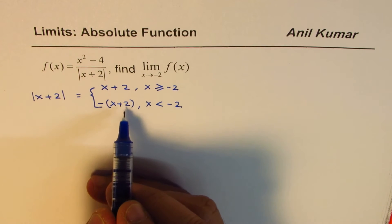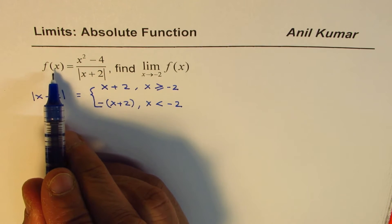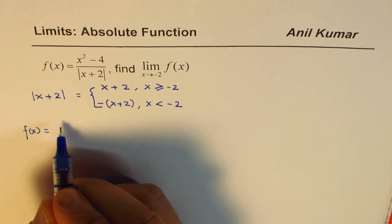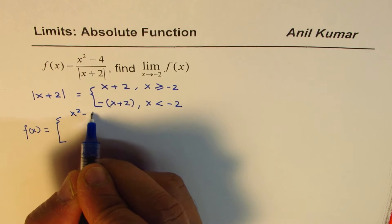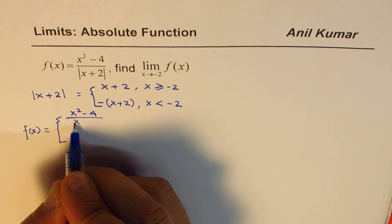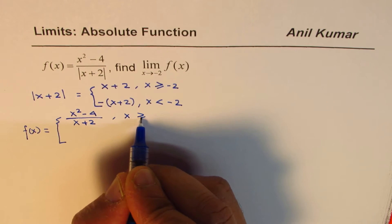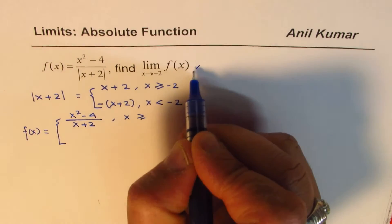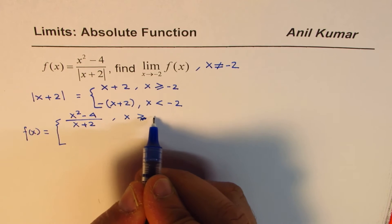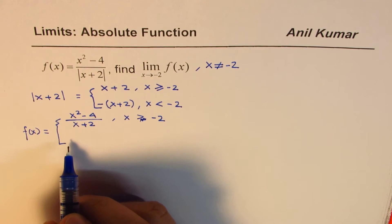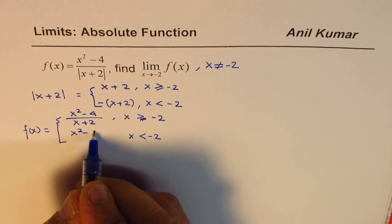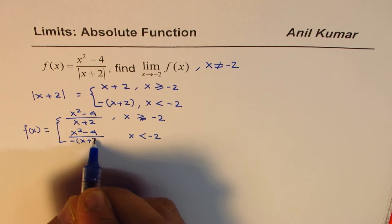Once we've defined the absolute function as a piecewise function, f(x) itself can be written as a piecewise function. The numerator is x squared minus 4 throughout. For x greater than minus 2, the denominator is x plus 2 — noting that x cannot equal minus 2 since the denominator cannot be zero. For x less than minus 2, the denominator is negative of x plus 2, giving us x squared minus 4 over negative of x plus 2.